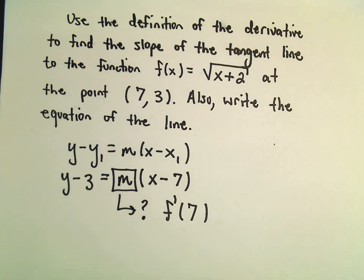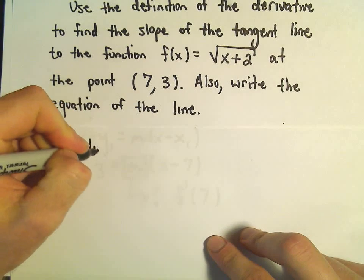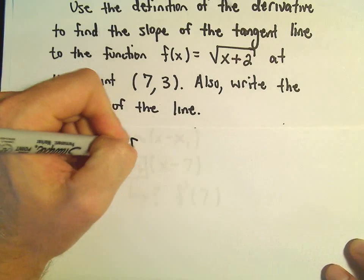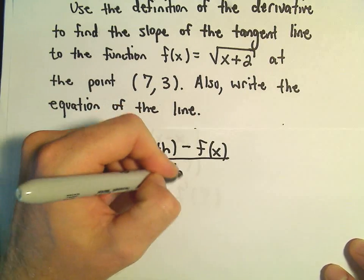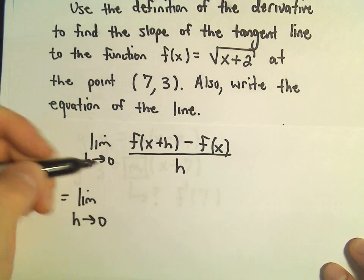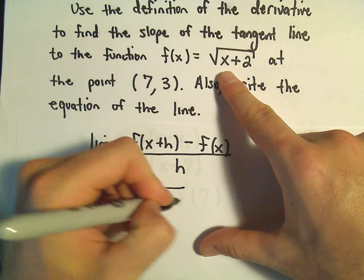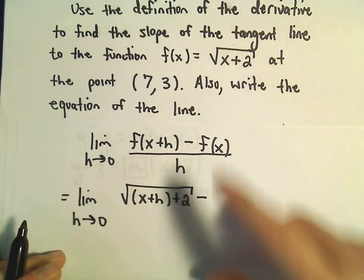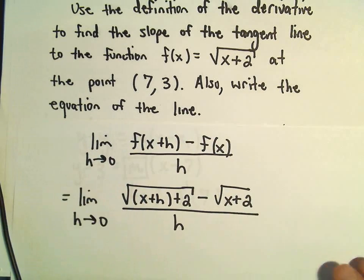The derivative formula tells you the slope of any tangent line, but you have to specify at what point. To get the slope, we'll find the derivative and then plug in the x-coordinate of 7. So we use the formula: the limit as h goes to 0 of f(x+h) minus f(x), all over h. Plugging in, we get the square root of x plus h plus 2, minus the square root of x plus 2, all divided by h.